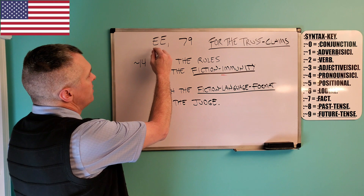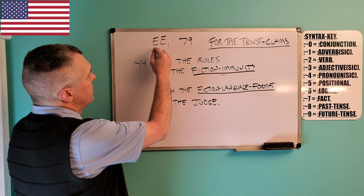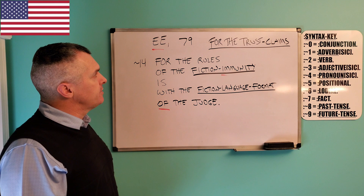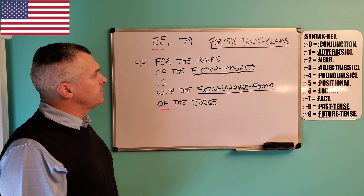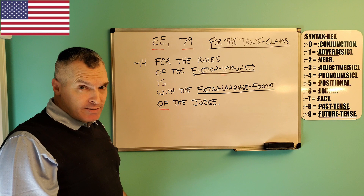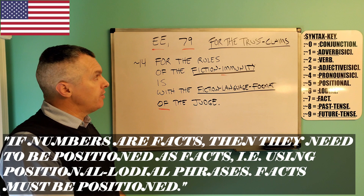First of all, this 'E.E.E.' which is handwritten in there has not been positioned. We don't know what that is. There's no colon in front of it, it's not abbreviated, there's no positional phrase — it's just a pronoun floating in a sea of space. Same thing with this number. If numbers are facts, facts need to be positioned with a positional phrase, otherwise they are not facts. Facts must be positioned. This has not been positioned.